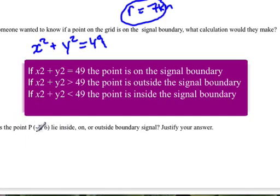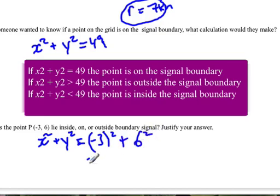Now, the point P is negative 3, 6. If we calculate x squared plus y squared, that's negative 3 squared plus 6 squared. Negative 3 times negative 3 is 9, plus 6 squared is 36.